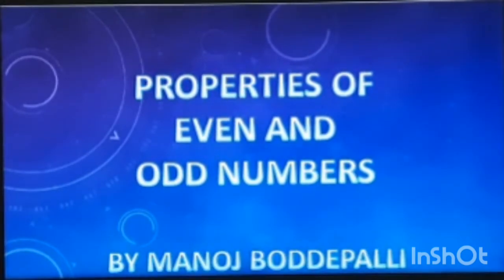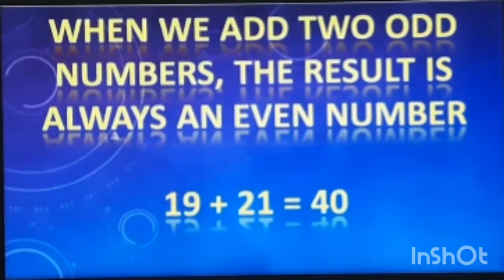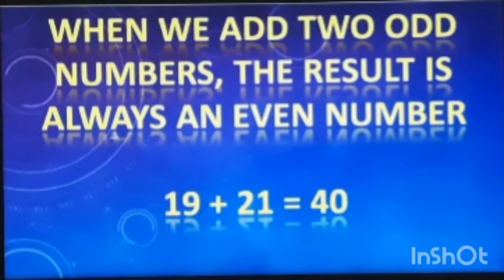The first property of even and odd numbers is, when we add two odd numbers, the result is always an even number. Let me take some examples so that you can understand this. 19 and 21 are two odd numbers. If we add them, we get 40, which is an even number.